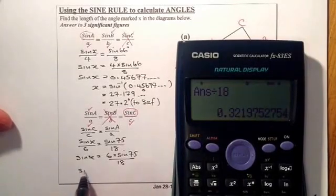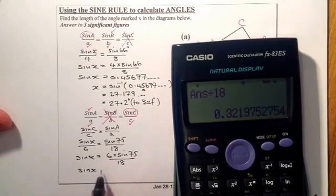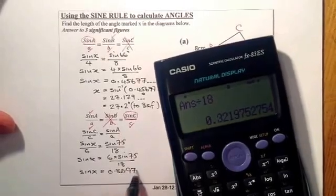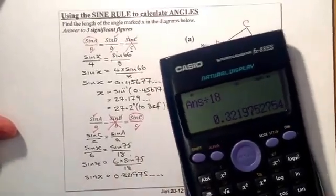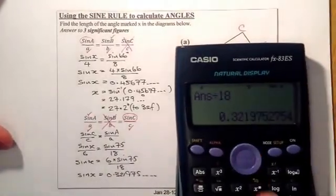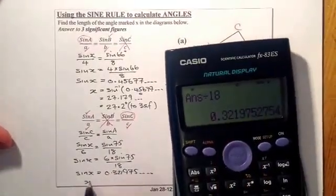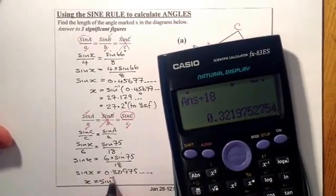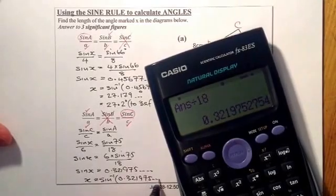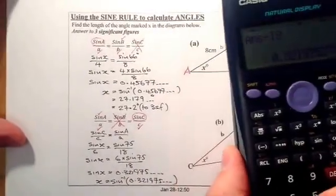So that will be sine x, it's going to be equal to 0.321975. And what I need to do now is take the inverse sine to work that out. I'm going to leave that number in the calculator there. From there, I'm going to go for the inverse sine of 0.321975 just left in the calculator.